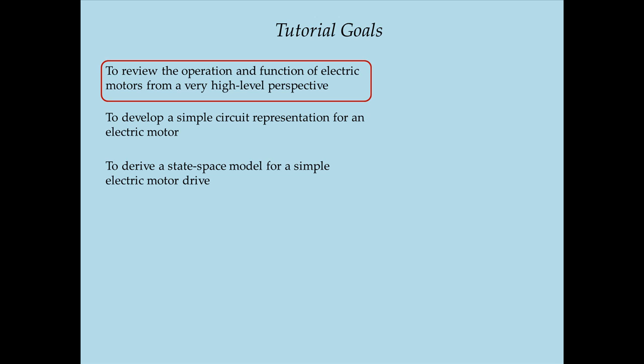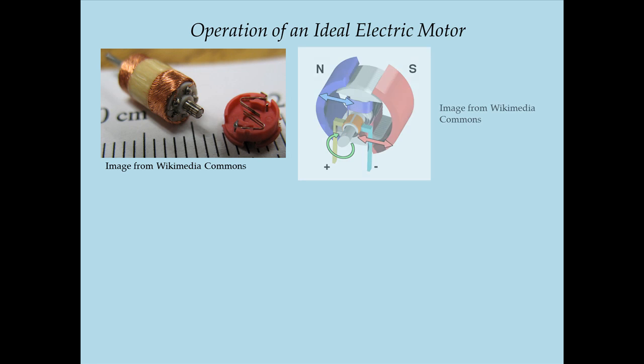Moving on to the first goal, reviewing the operation and function of electric motors from a very high-level perspective. I am very grateful to Wikimedia Commons for some of the really nice imagery they have for real physical electric motors, as well as some of the diagrams for how these electric motors operate. These are two images obtained from Wikimedia Commons. The image on the left shows a very simple and inexpensive electric motor, containing essentially a rotor that has coils wound in it. These coils are ultimately connected to rings that are on a shaft.